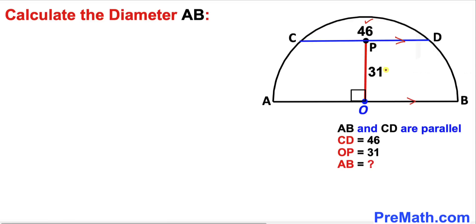This line segment OP is 31 units, and now we are going to calculate this diameter AB.